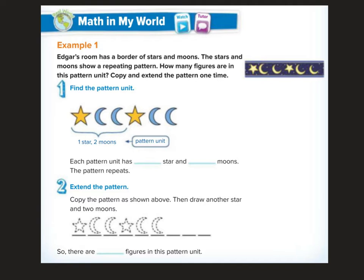Example 1 says, Edgar's room has a border of stars and moons. The stars and moons show a repeating pattern. How many figures are in this pattern unit? Copy and extend the pattern one time. So if we look at a unit, what are all the things that happen before it starts repeating itself? So we notice in this pattern unit, our pattern is one star, two moons, one star, two moons. So each pattern unit has one star and two moons. The pattern repeats.